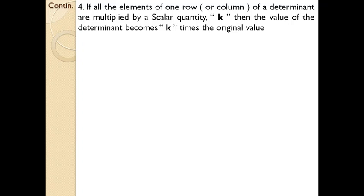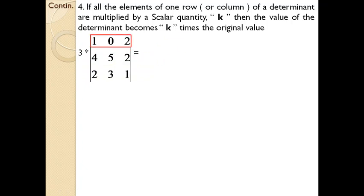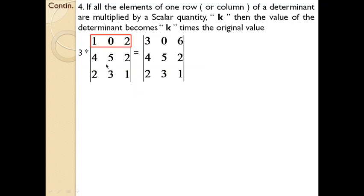That is another property we discussed in advance in the previous example. Here a determinant of order 3 is given, and there is a scalar — a common number — used to multiply one of the rows. Multiplying the first row: 3×1=3, 3×0=0, 3×6=18. The determinant value will be 3 times the actual determinant value, because we multiplied a particular row by a scalar.